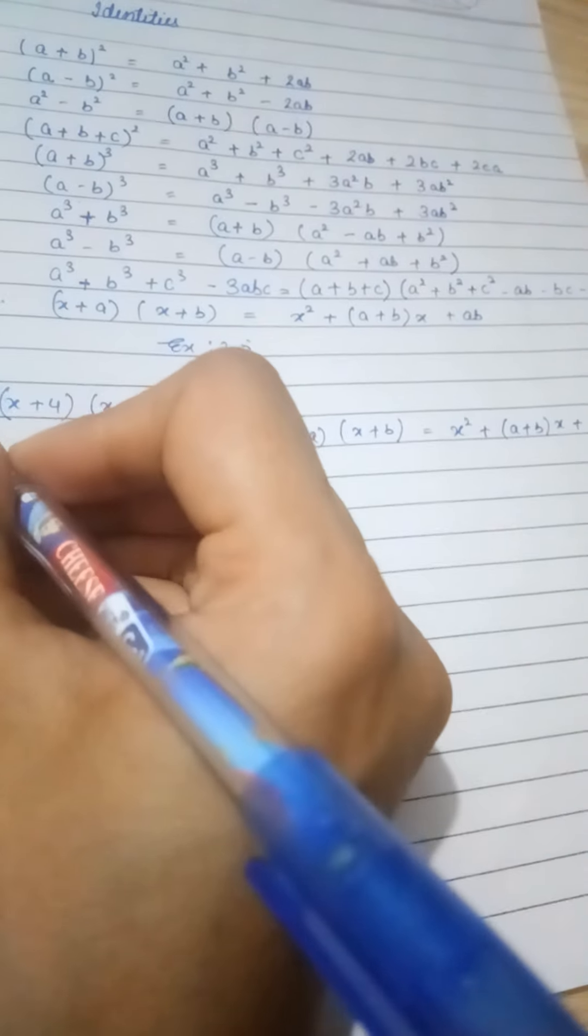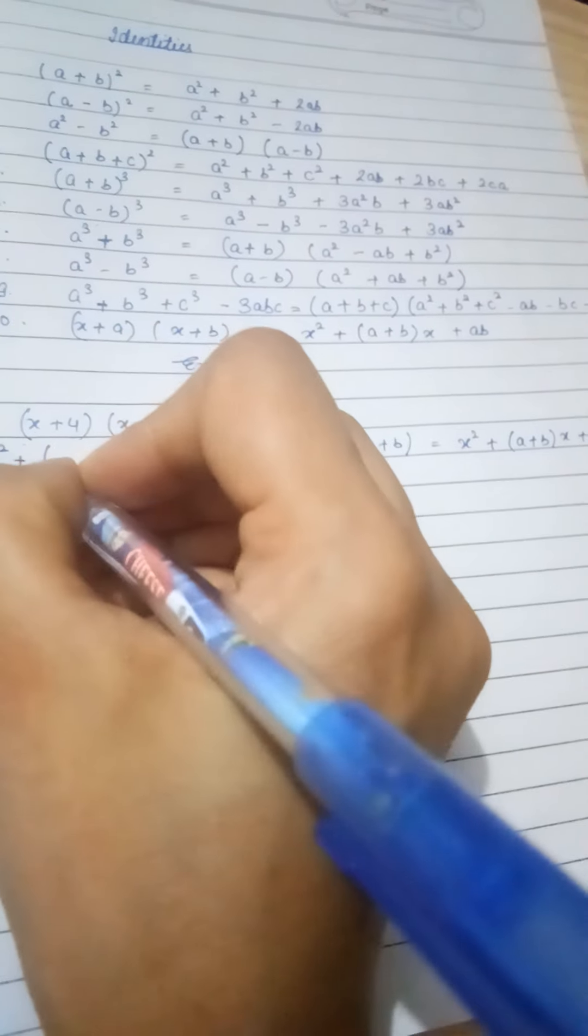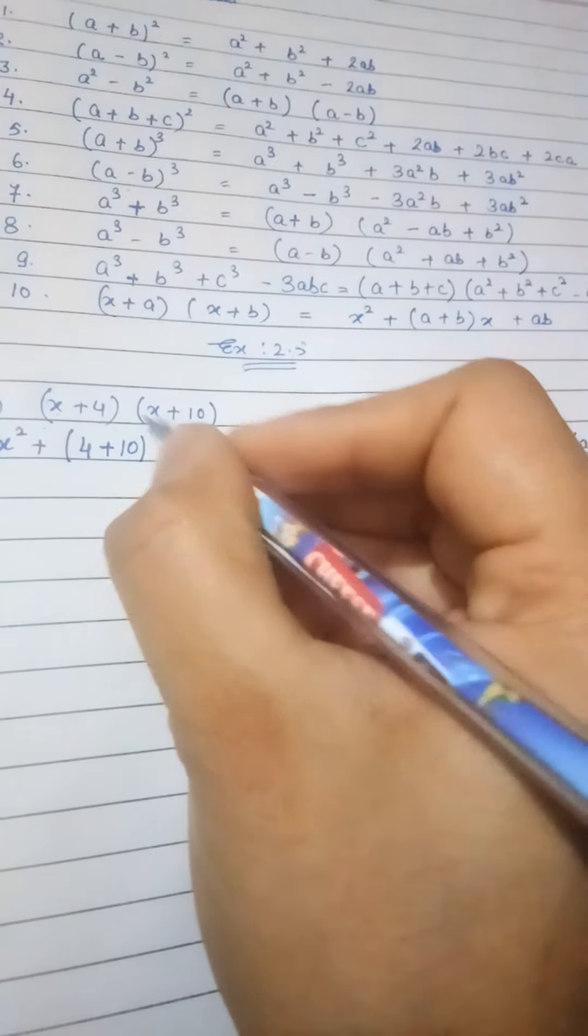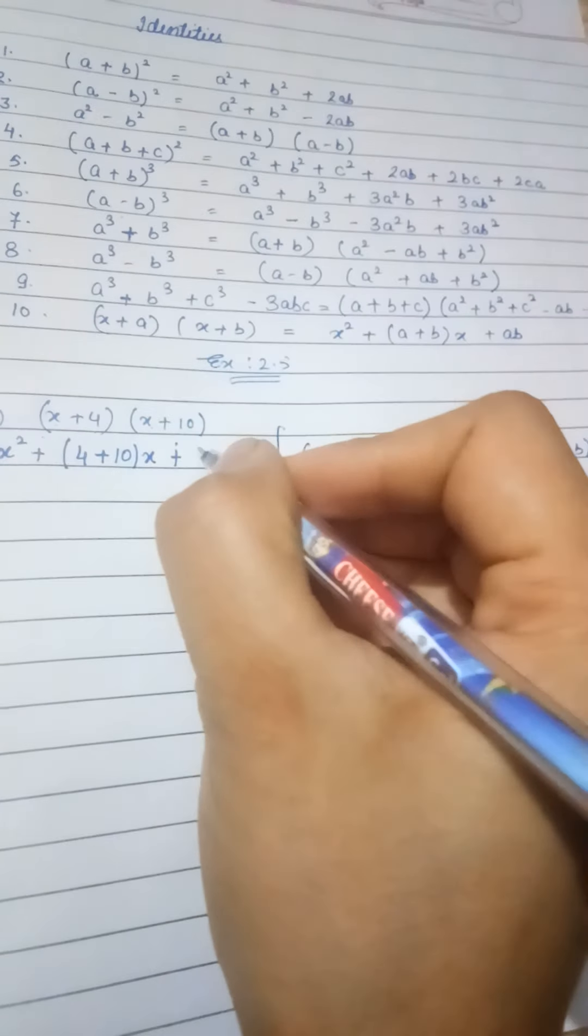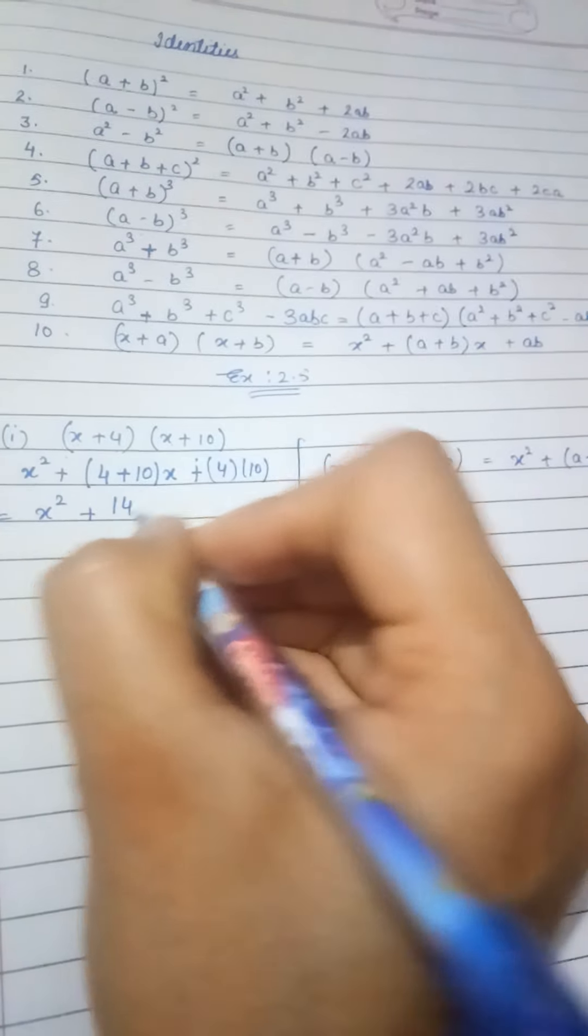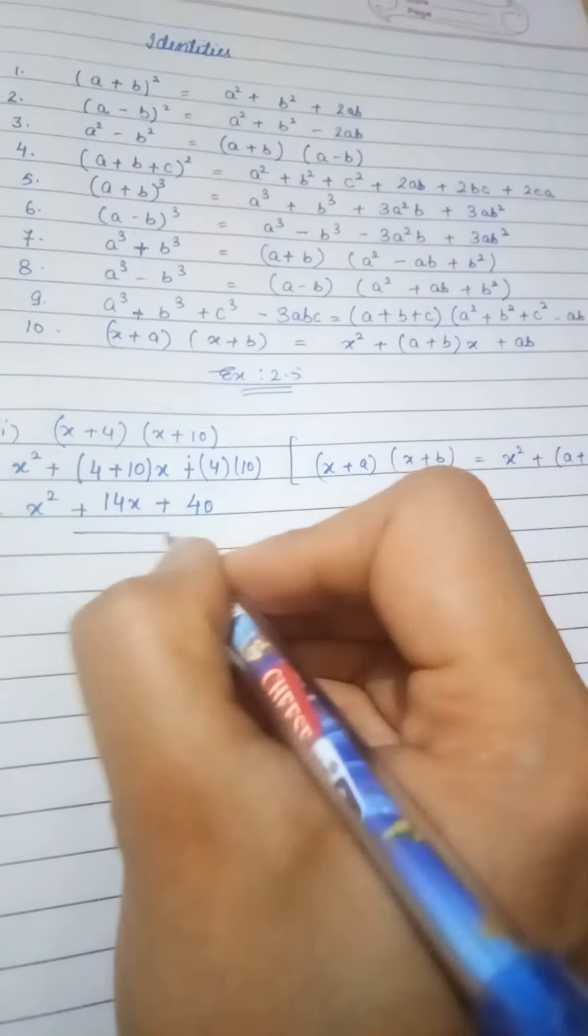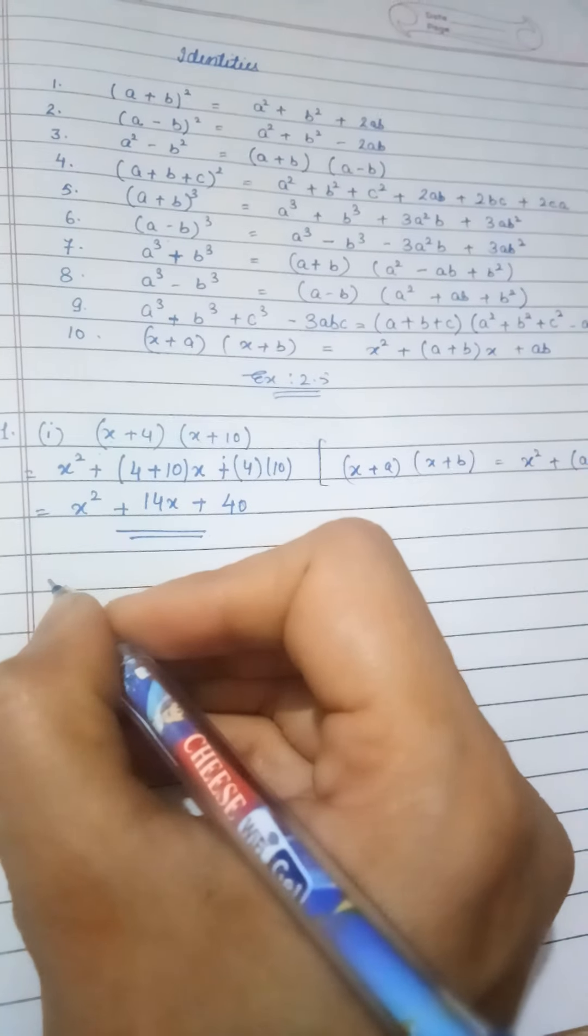So let us start with x squared. The first term is x squared again, and then plus a plus b. a is 4 and b is 10, so a plus b equals 14. Then we have the third term which is 4 times 10.